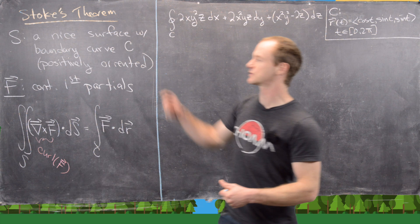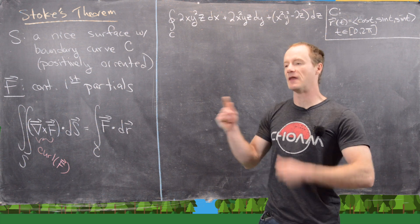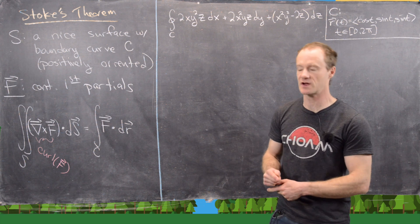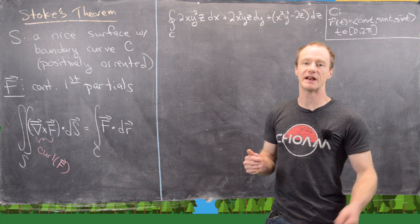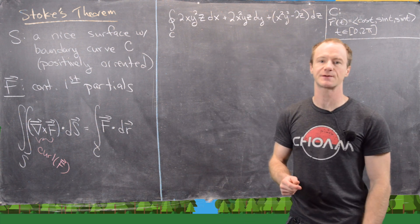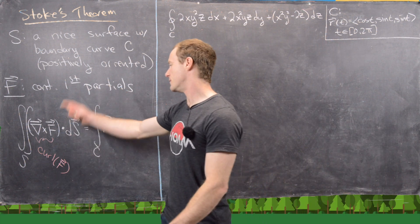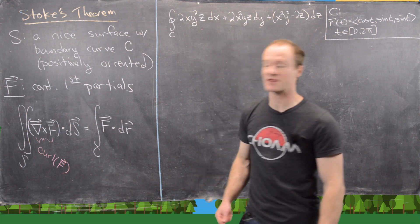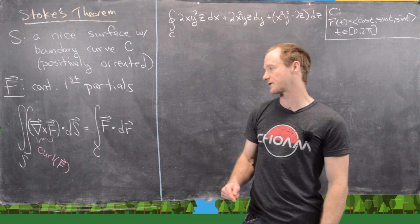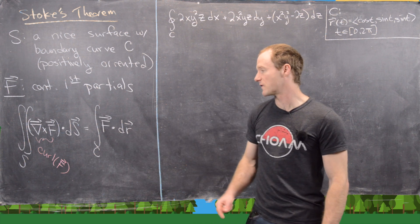So if S is some nice surface — it has to be piecewise smooth and it has a boundary curve C — there's something having to do with the orientation of the surface and the orientation of the boundary curve, which I'll point out when we get to it. And then F is a vector field with continuous first partials on a set that contains S. The conclusion says that the surface integral over S of the curl of F dot dS equals the line integral over the vector field F.